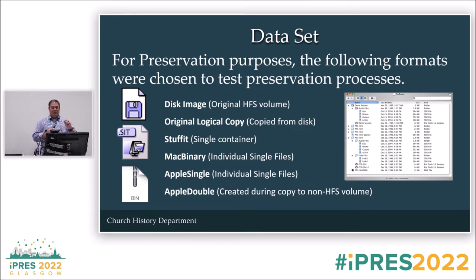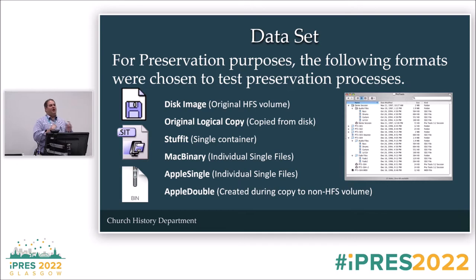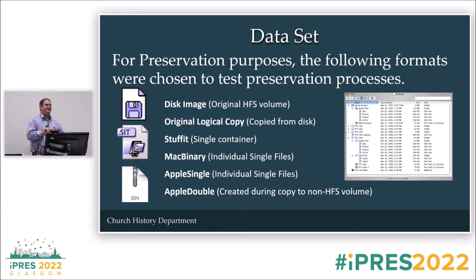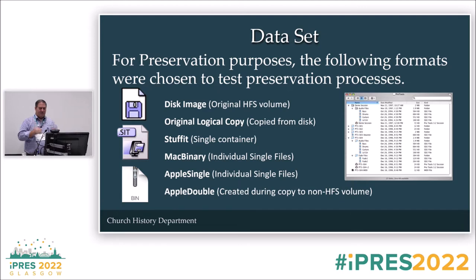The problem is that Pro Tools versions three through five used a session file that only used the resource fork — it did not use the data fork at all. So when you copy those files off of an HFS volume, they come over as zero kilobytes and are easily dismissed or thrown away. In our case, when we tried to ingest those into our preservation system, they failed because we have a policy that zero-byte files get flagged on ingest. So we needed to look a little closer at this.